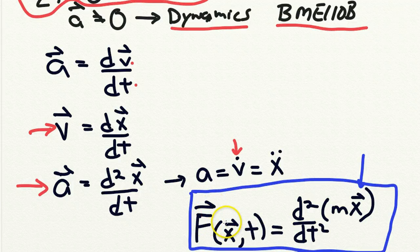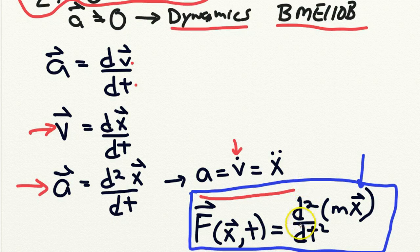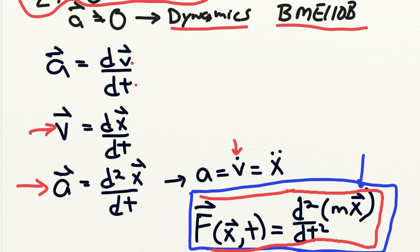And so we can write overall the equation F equals ma this way, is that the sum of all the forces, and the forces are a function of the position of a particle and the time, is equal to the second derivative with respect to time of the mass times the position vector. So this is the fundamental equation of this class.